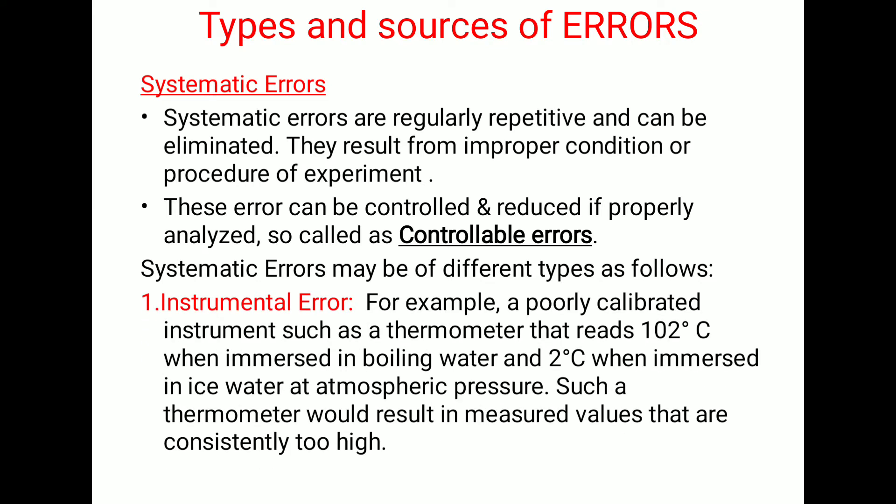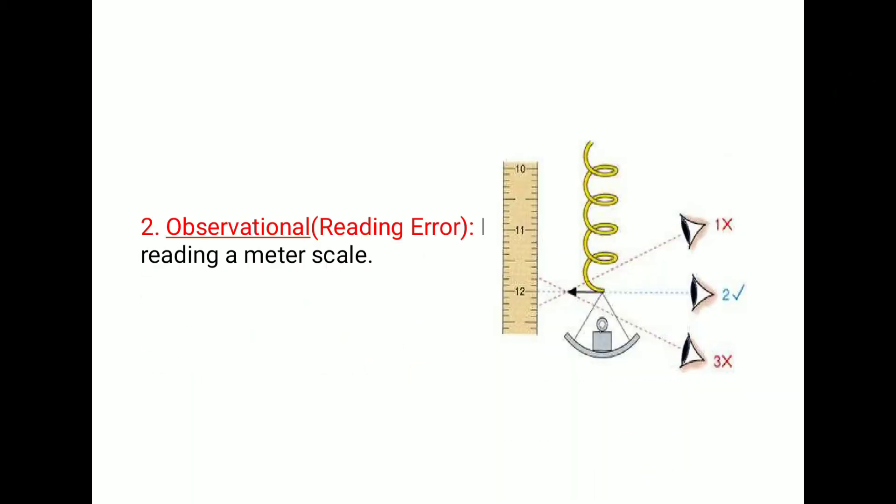The first type is instrumental error. For example, a poorly calibrated instrument such as a thermometer that reads 102 degrees Celsius when immersed in boiling water and 2 degrees Celsius when immersed in ice water at atmospheric pressure. Such a thermometer would result in measured values that are consistently too high, because we are observing a difference of 2 degrees Celsius.